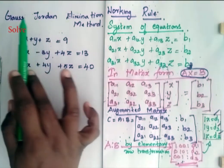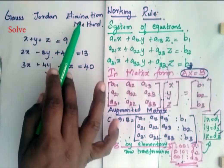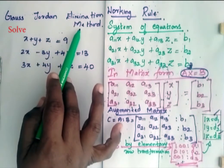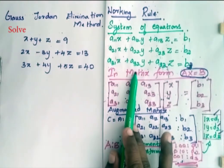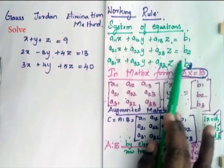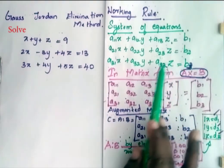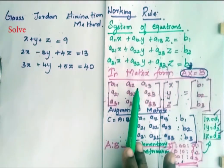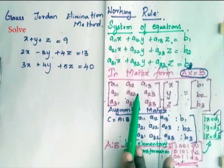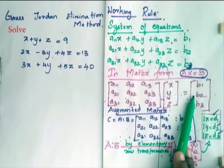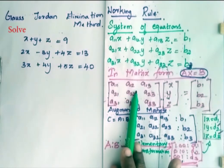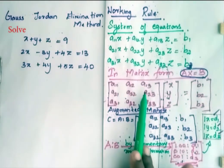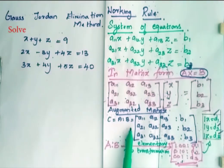Solve these equations by the Gauss-Jordan elimination method. Now when we see the working rule, we have a system of equations. First, represent the system of equations in matrix format, and after that, go for representing them in an augmented matrix.